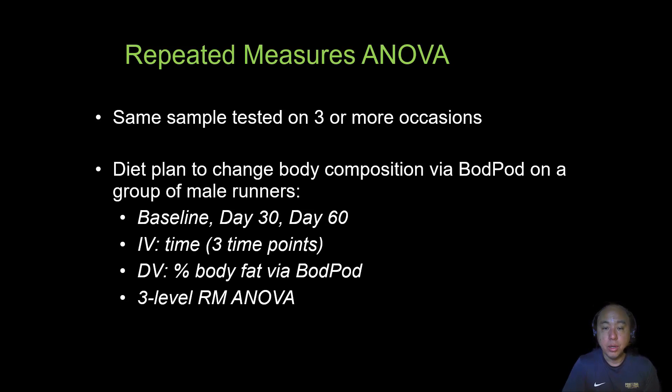But what if we want to have the same sample of students or research participants being tested on multiple occasions? I talked about the paired t-test in another video, and in the paired t-test, the same sample is being tested twice. But if we're testing that same sample on three or more occasions, then we can't use a paired t-test. We have to use what's known as a repeated measures ANOVA, where the repeated measures is time or trials or different occasions.